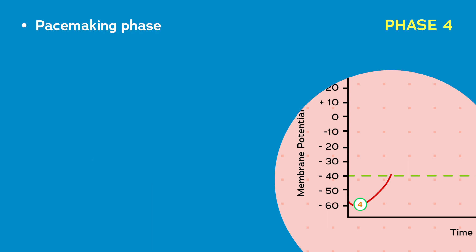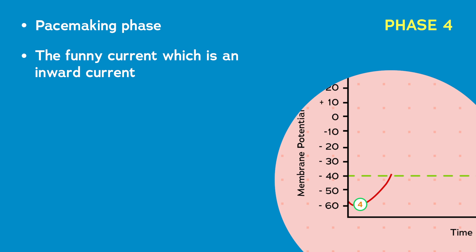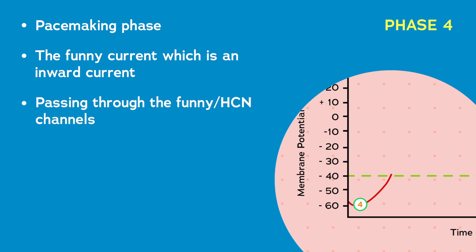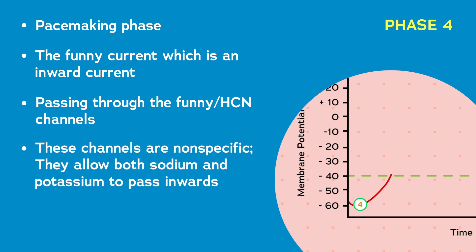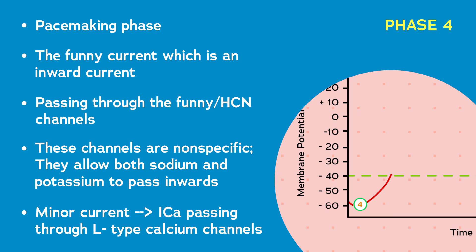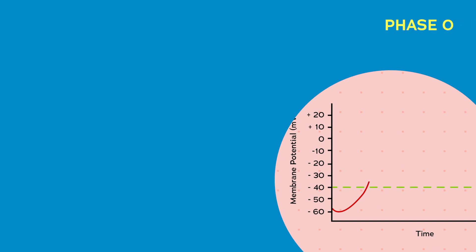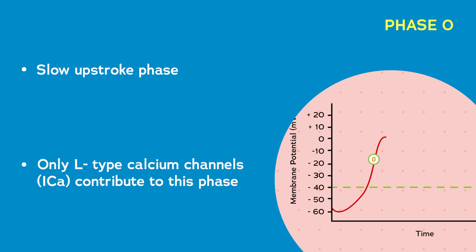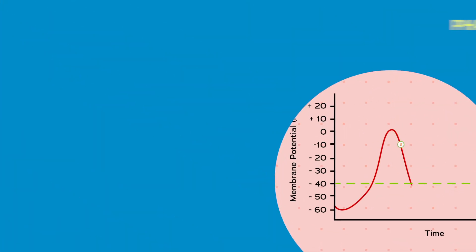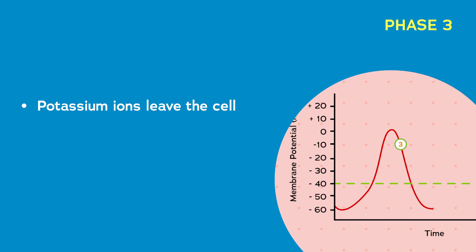To summarize the SA node action potential: Phase 4 is the pacemaking phase, driven mainly by the funny current through HCN channels — non-specific channels allowing both sodium and potassium to pass inward — with a minor contribution from L-type calcium channels beginning to open. Phase 0 is the slow upstroke, occurring when the threshold is reached and L-type calcium channels open for a large influx of calcium. Only L-type calcium channels contribute to Phase 0. Finally, after about 150 milliseconds, the L-type channels close and potassium channels open, causing repolarization.